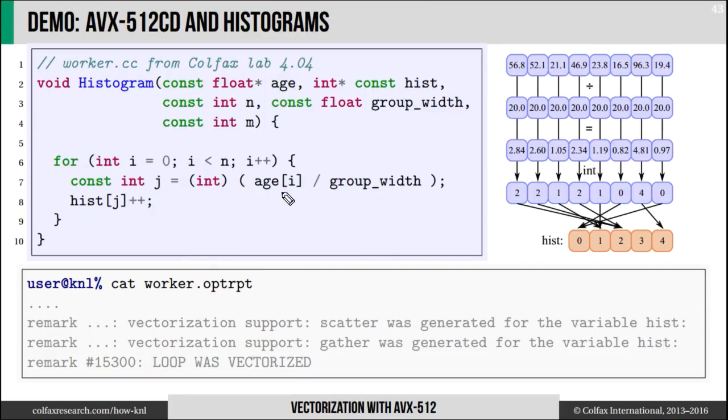In serial code this is trivial to do. I take the age of one person, divide by the group width which in my case is 20 years, and this gives me a number that I need to round down to the nearest integer. This integer I will use to compute the location of the counter that I need to increment - this is basically the group number.